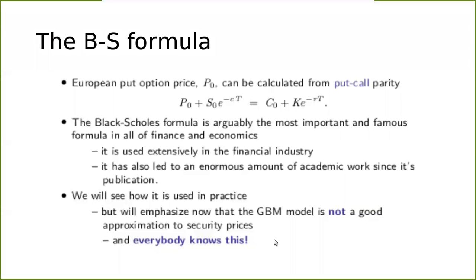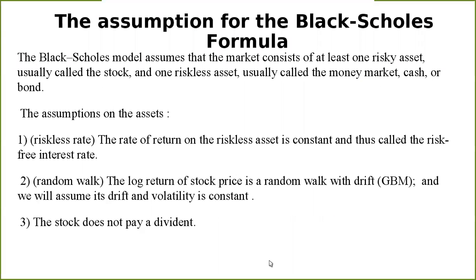Geometric Brownian motion — the formula where S(n) equals S(0) multiplied by the exponent to the power of mu minus sigma — is not a very good approximation to securities prices, and everybody knows that. But everybody can still use this formula with the appropriate adjustments.